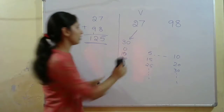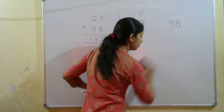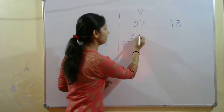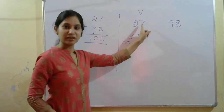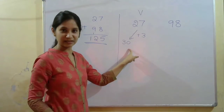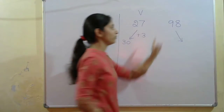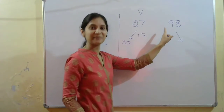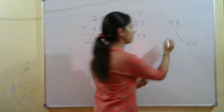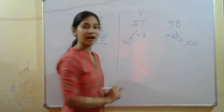The nearest multiple of 10 for 27 is 30 — you added 3 to get there. Similarly, the nearest multiple of 10 for 98 is 100, and you added 2 to get 100 from 98.